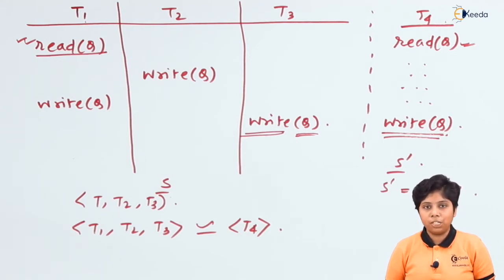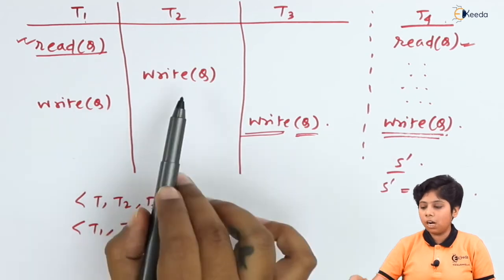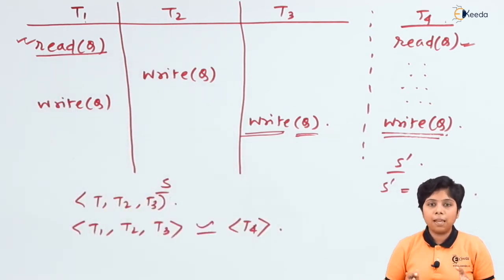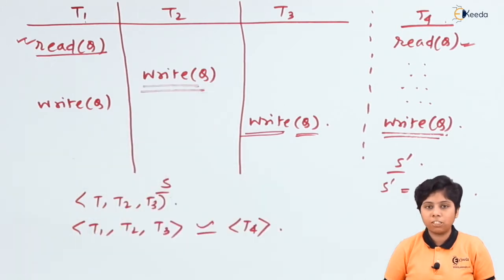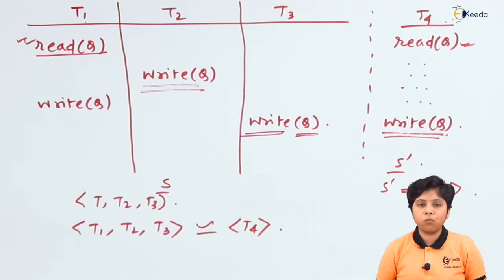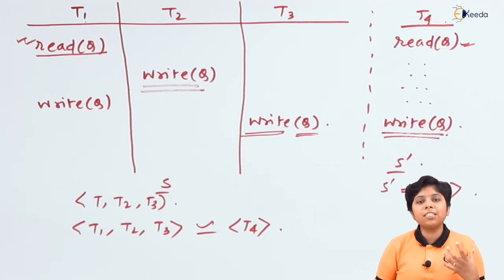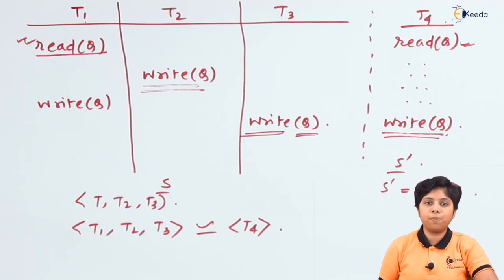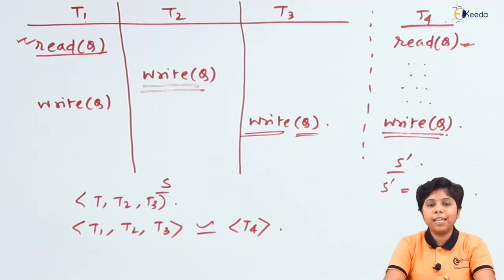This schedule is not conflict serializable because there are conflicting operations — there is a read and write on the same data item performed in the same schedule by different transactions, where at least one of them is a write operation. So it is conflicting but also view equivalent or view serializable. The validation protocol checks for validation at each step. Unlike the timestamp protocol or Thomas Write protocol — which either reject and rollback, or ignore writes — the validation protocol validates writes so they can be performed at the end of the transaction.